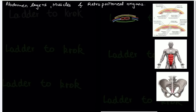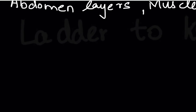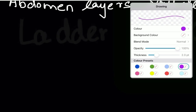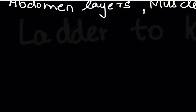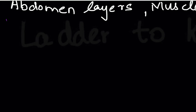Starting with the abdomen layers — you must remember them in a sequence because they are situated one after another. We'll start from the very outside layer, which is skin. If you remove the skin, you can see something called the superficial fascia.